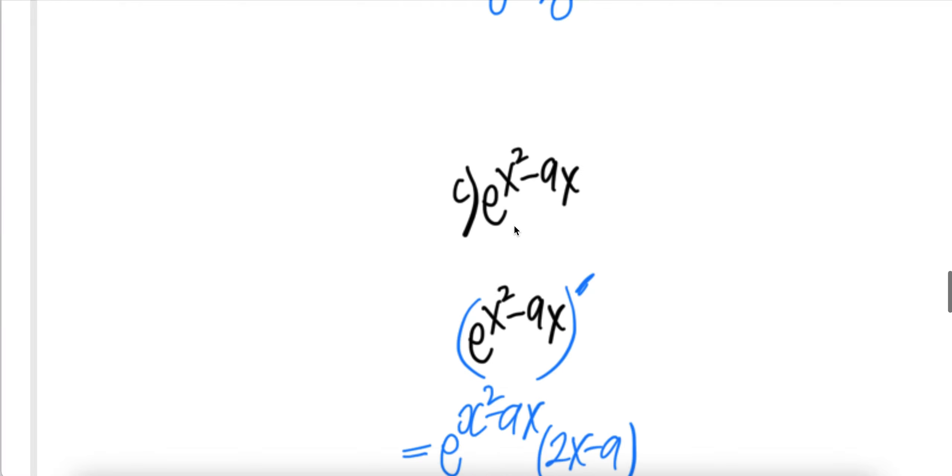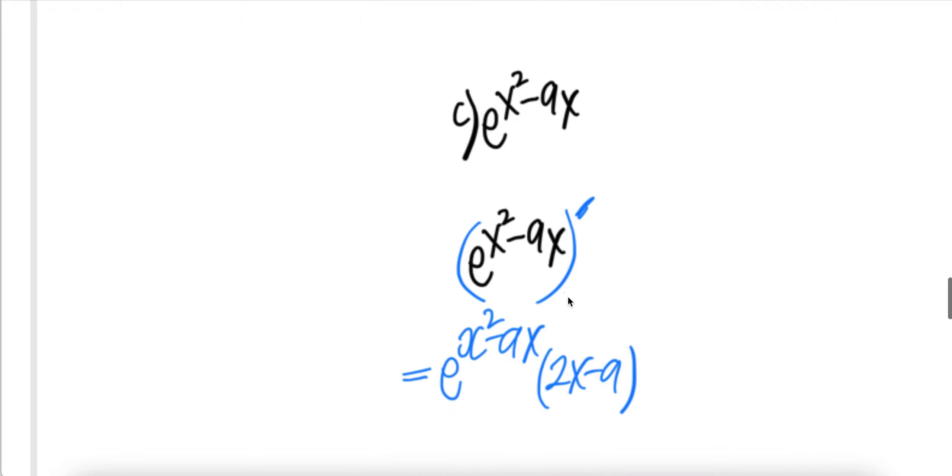Part C. Derivative of e to power something is e to power something, times the derivative of the something is, derivative of x squared is 2x, derivative of minus ax is minus a.